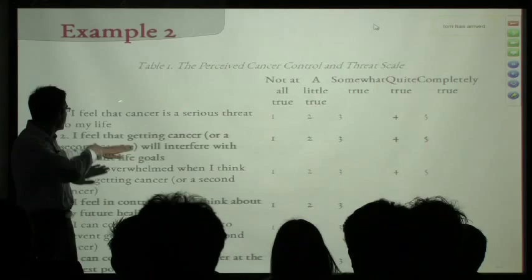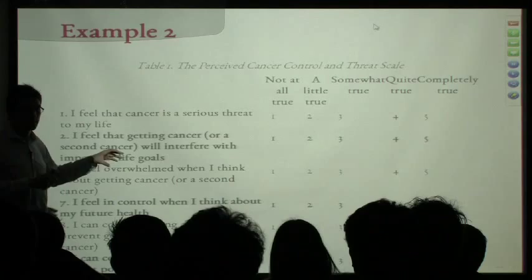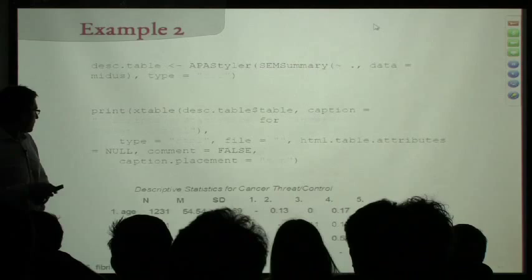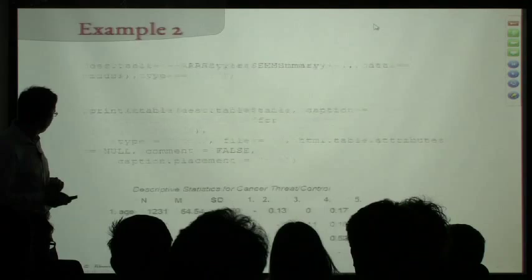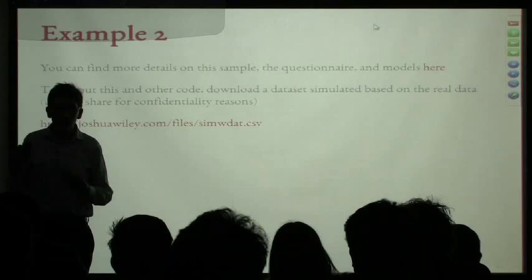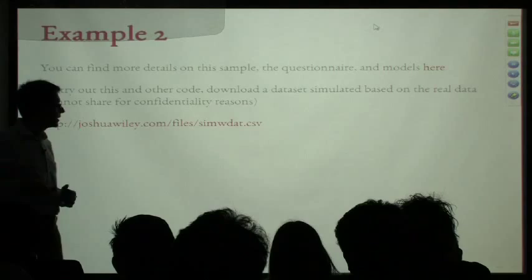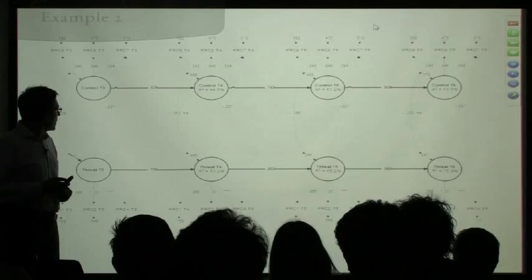Regarding treating 1-to-5 Likert items as continuous: people do this depending on how many items you have. You could also treat them as ordinal using MCMCglmm, or lavaan can handle categorical data from other distributions. The key difference when working with ordinal scales is making the additional assumption that the ordinal scale comes from a continuous underlying distribution that's been cut, then you estimate that underlying distribution and put the factor model on top of it.